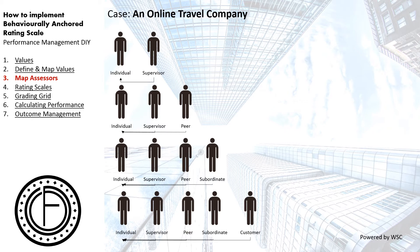Another option is to have the individual assess himself or herself, the supervisor assess the individual, a peer assess, and a subordinate also assess. This is getting close to what we refer to as a 360-degree appraisal system. You can also bring the customer into the cycle — customer could be internal or external, depending on the job portfolio of the individual being assessed. We'll discuss more on this when we get to the BARS nuggets.